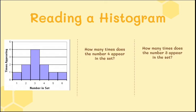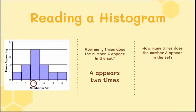Now let's read a histogram showing numbers in a set and how many times each number appears. If I ask how many times does number 4 appear, go to 4 on the number line and read how high the bar goes — it goes up to 2, so 4 appears 2 times. How many times does 3 appear? Go to 3 — it appears 4 times. So 3 appears 4 times in the set.